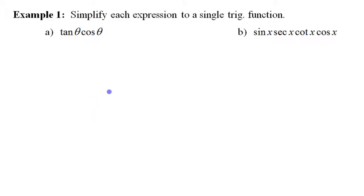So here's the first example of how to use basic trig identities to simplify expressions. We've got a couple of different expressions here that we'll try and simplify. First one here, you have tangent theta times cosine of theta.